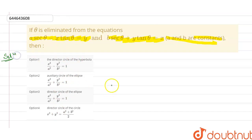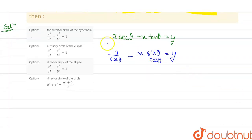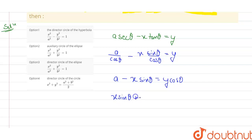So in the solution, the first equation says a sec θ minus x tan θ equals y. Writing sec θ as 1/cos θ and tan θ as sin θ/cos θ, we get a/cos θ minus x sin θ/cos θ equals y. Multiplying both sides by cos θ, this becomes a minus x sin θ equals y cos θ. Rearranging, we get x sin θ + y cos θ = a. This is equation number one.